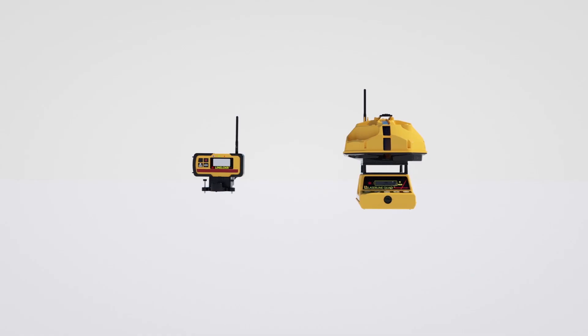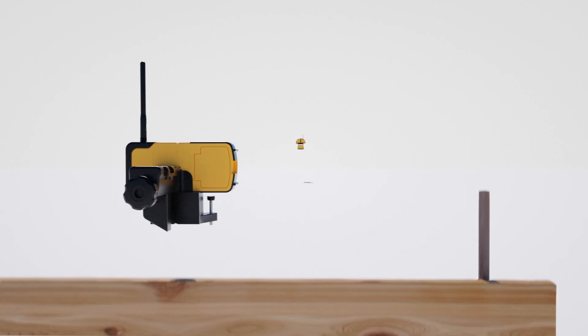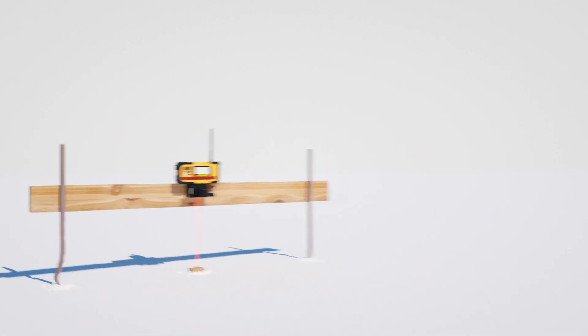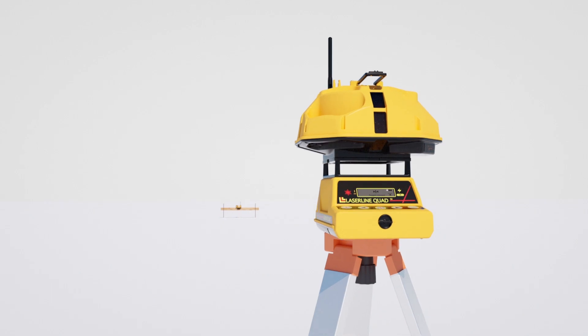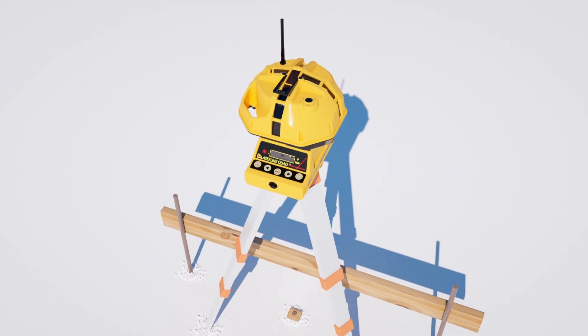The Quad 4000 from LaserLine Manufacturing reduces time and cost for line, squaring, and grid layout by up to 50%. The Quad 4000 sets up on a tripod over a point with its downward pointing laser.